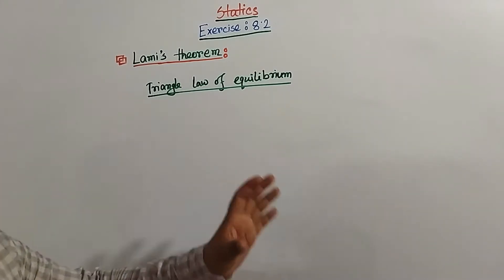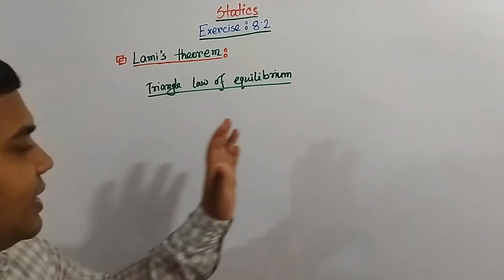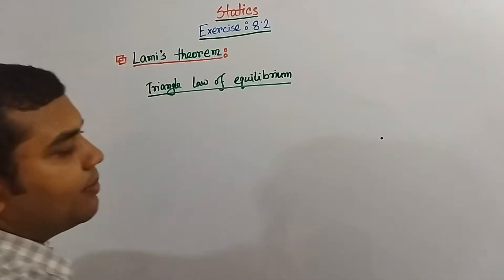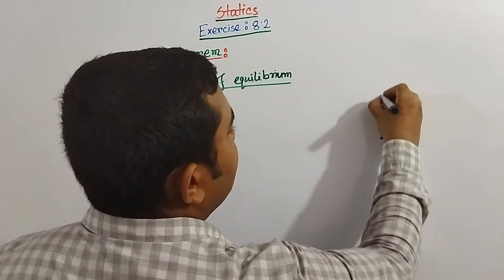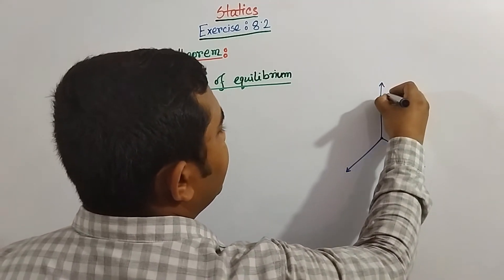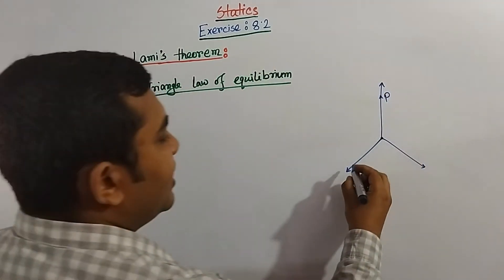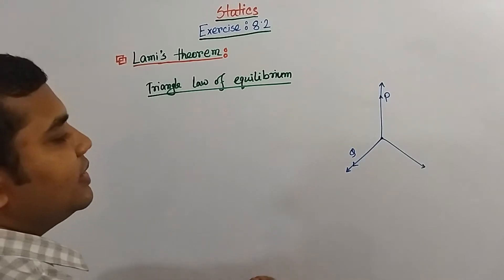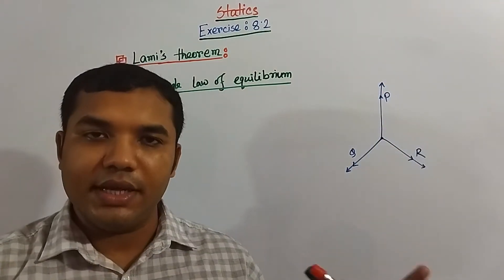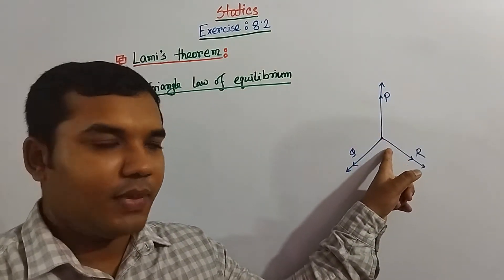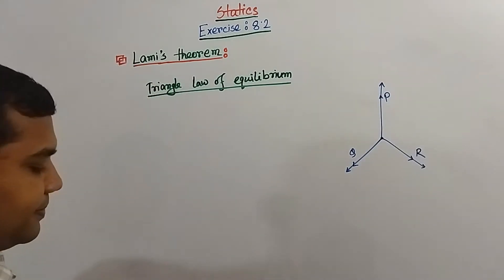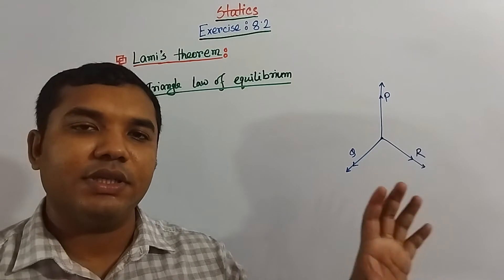What is this law expressing? To understand this part, we have to assume that 3 forces will be acting at the same point. For example, this is a fixed point where 3 forces are working. P force has been acting in this direction, Q force has been working in this way, and R force has been working in that direction. All these 3 forces are acting on this same point. From that, we can say that this actually represents 3 forces in a triangle.